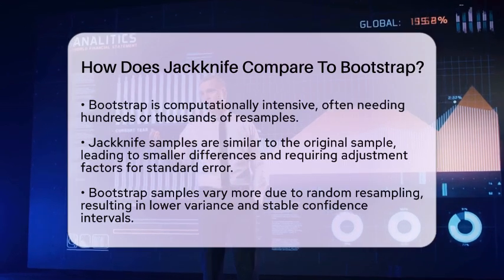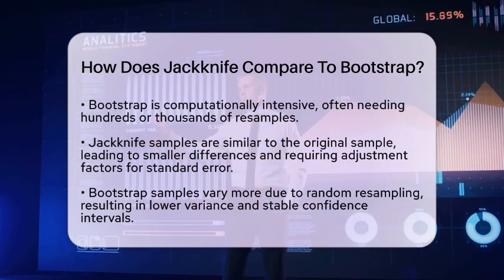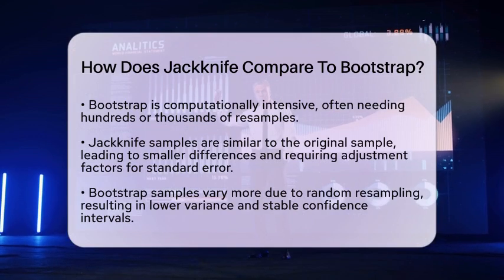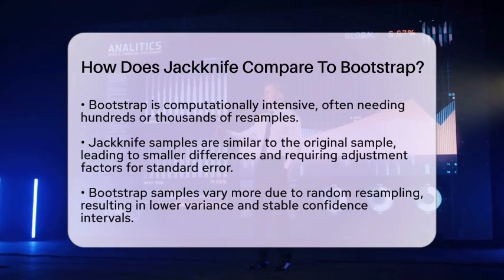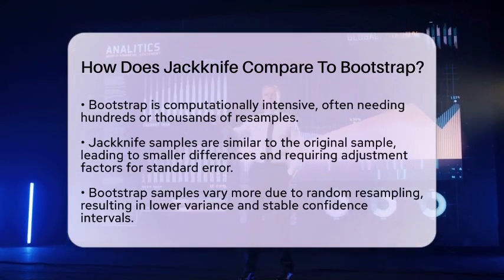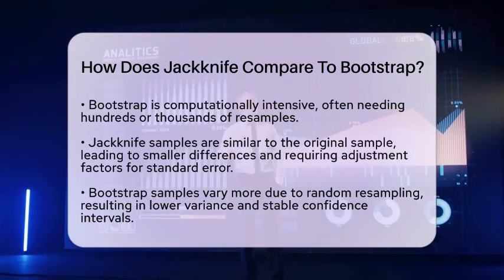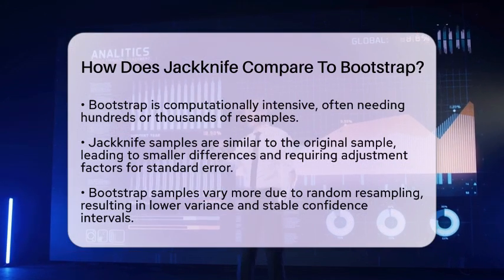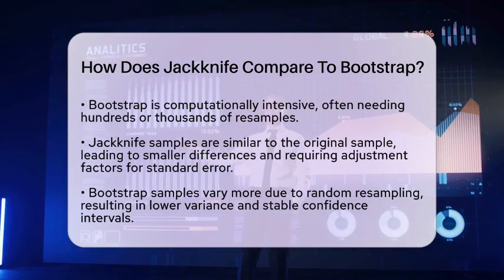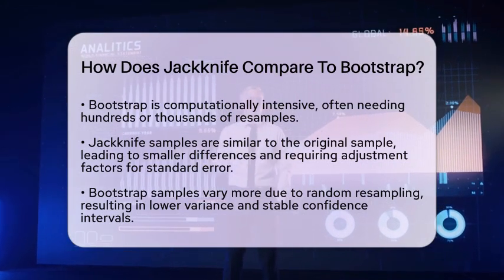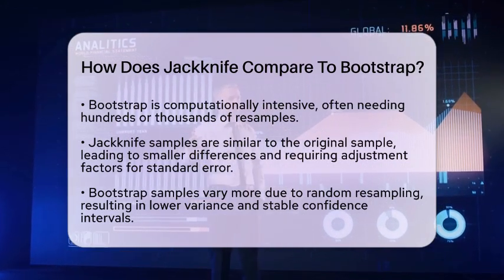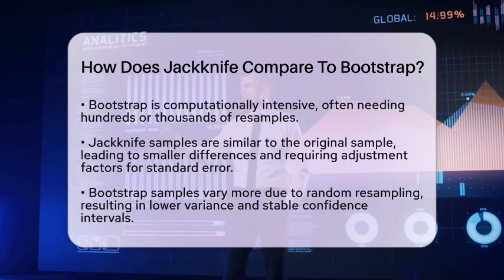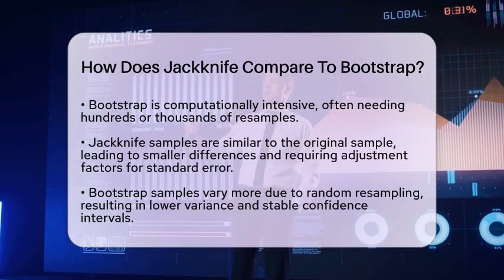When we look at variability and bias, Jackknife samples tend to be very similar to the original sample. This can lead to smaller differences between replicates, which means the standard error formula needs an adjustment factor. Bootstrap samples, however, vary more due to random re-sampling, capturing the statistic's variability better.